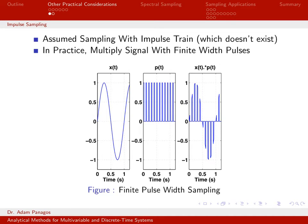So the next practical consideration that we want to take a look at is the nature of the impulse train that we've been using for sampling.